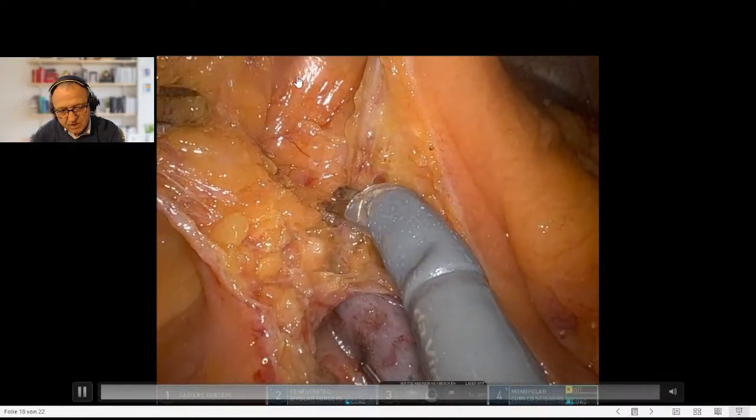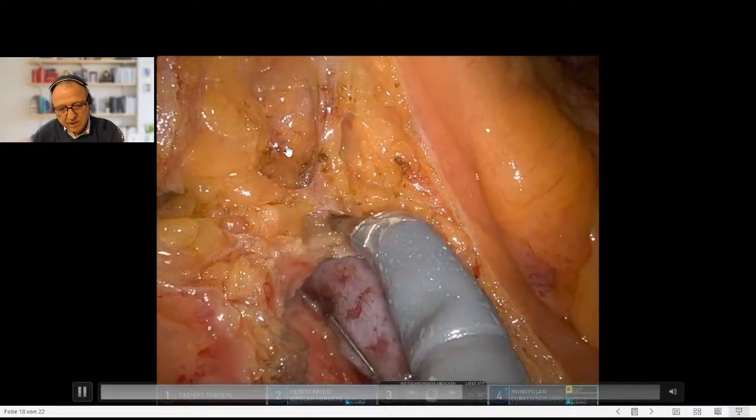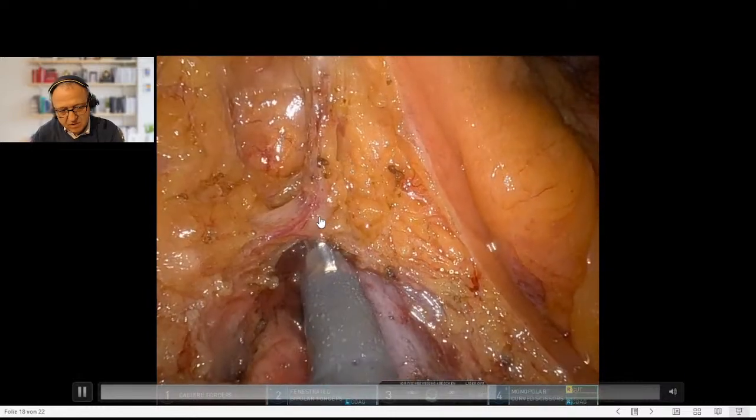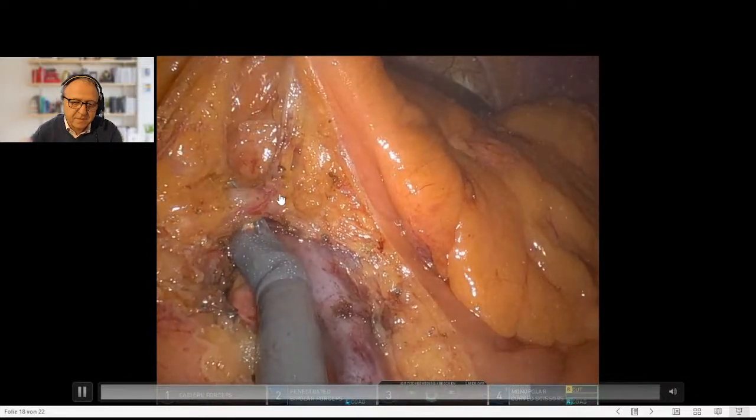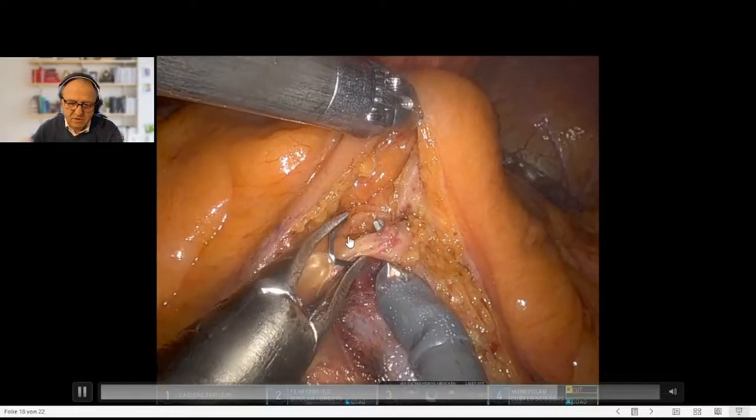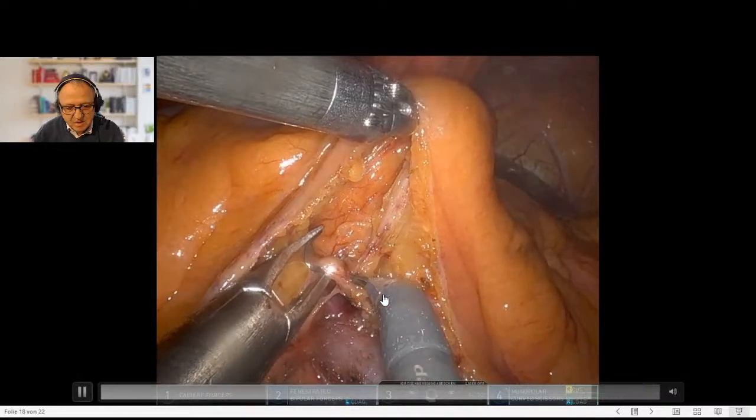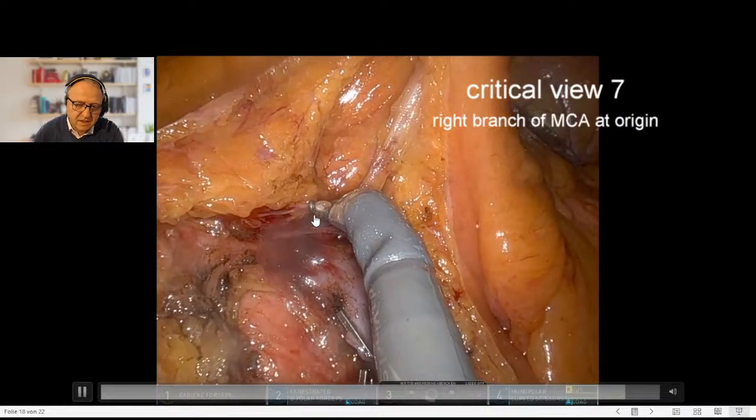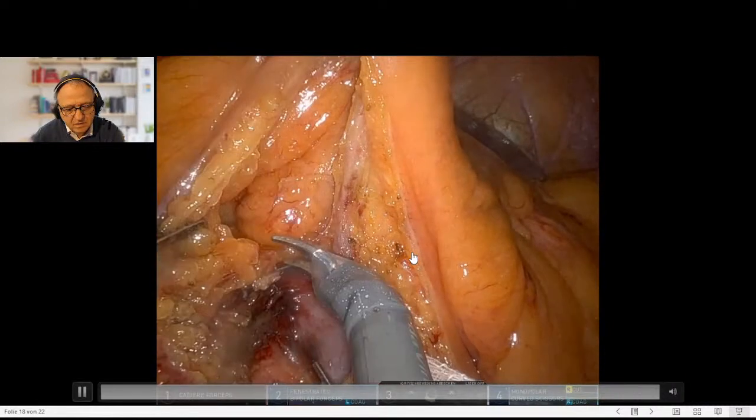We reach the former lesser sac here and dissect our way down to the right branch, which is usually a vessel that runs off at 90 degrees right at the base of the mesocolon. We're safe here because the lesser sac is open and we know we're not running into the pancreas. The vessel is then clipped and dissected. This can also be done with hemolocs, but I don't like the bulkiness.